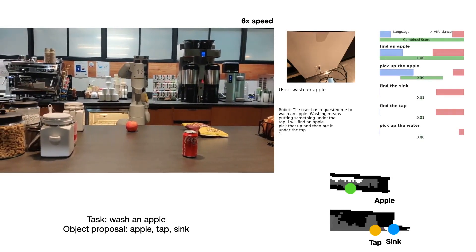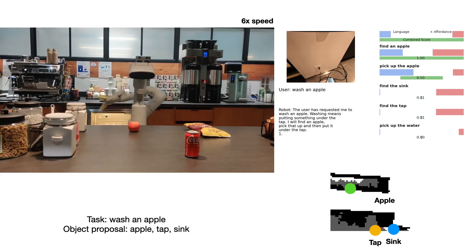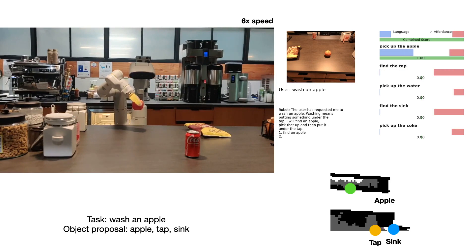Training a policy to wash items is beyond the scope of the project, so a simpler pick-and-place version of the task is demonstrated here. The robot correctly picks up the apple and puts it in the sink.